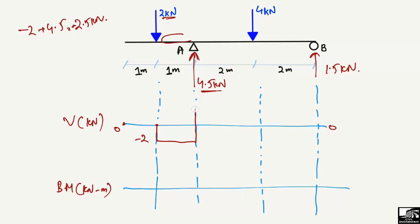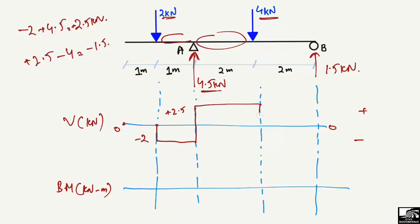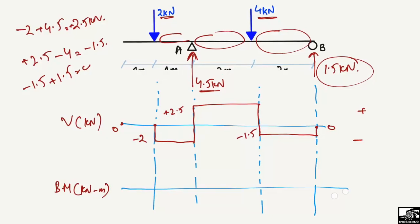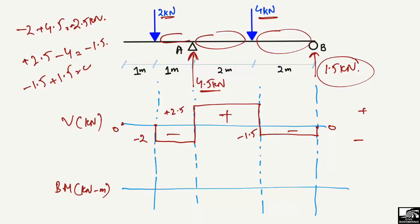So the shear force rises to plus 2.5 kilonewtons above the reference line. There is no load on the beam in the next section, so it continues as a straight line. Then the 4 kN load acts downward, so plus 2.5 minus 4 gives minus 1.5 kN. We bring this to minus 1.5, draw a straight line, and then the RB reaction of plus 1.5 kN brings the shear force back to zero, closing the diagram.